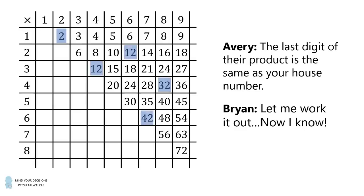There are many products that have a last digit equal to 2, and the two numbers have different sums. So Brian's house number could not have been equal to 2. He wouldn't have been able to figure it out. What if his house number was equal to 3? Well in one case we have 1 times 3 is equal to 3, but in another case we have 7 times 9 is equal to 63. So once again, if Brian's house number was equal to 3, he wouldn't have been able to figure out the sum of the two numbers.